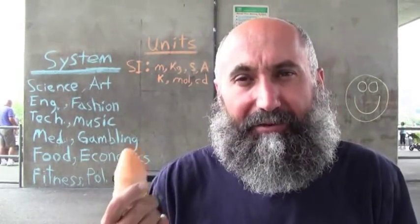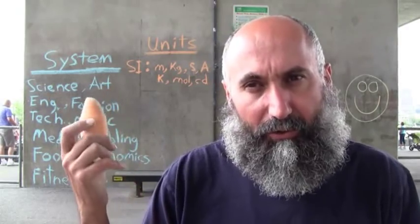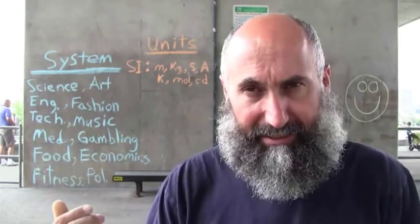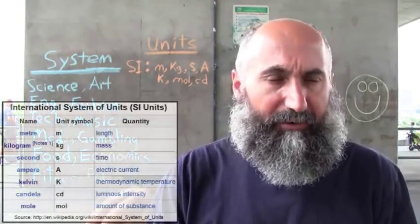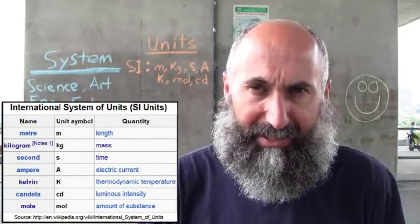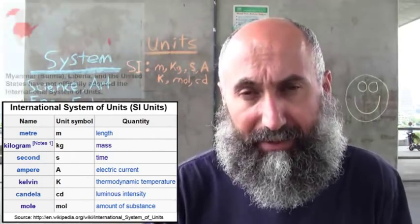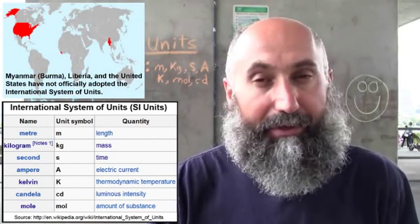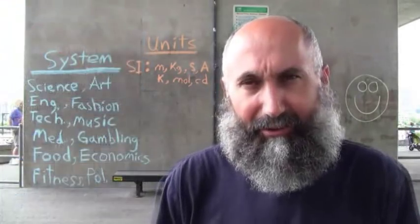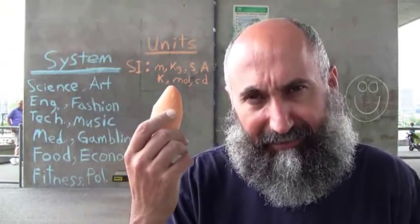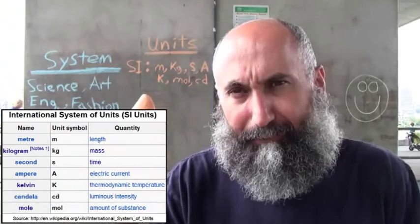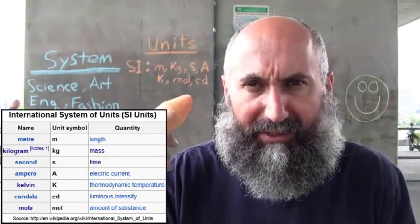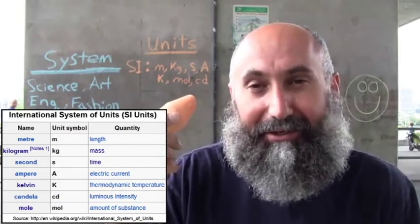There are seven base units that cross over a lot of these different disciplines. We've come up with an international system of units, which is recognized almost everywhere except three countries: the United States, Liberia, and Burma. Those seven base units are meters, kilograms, seconds, amperes, Kelvin, moles, and candela.